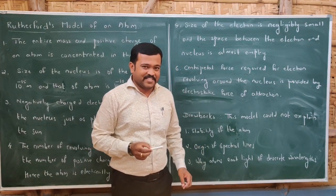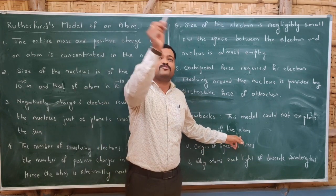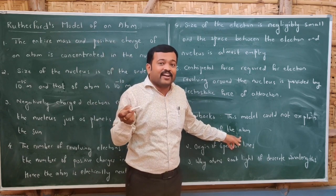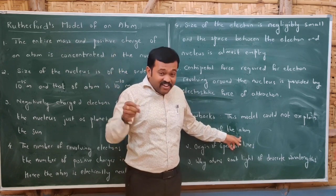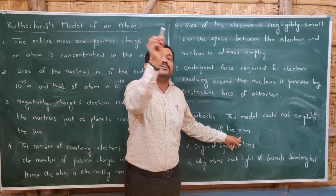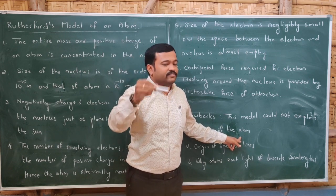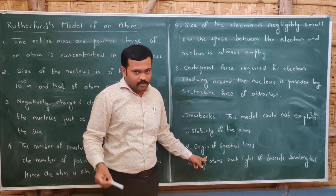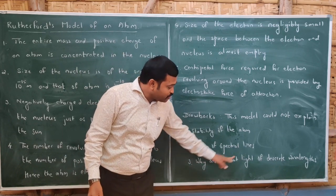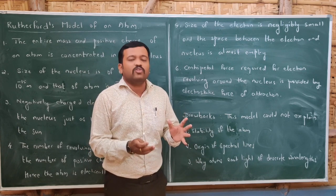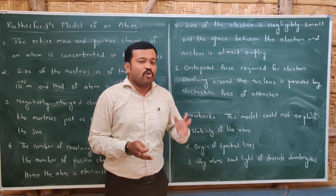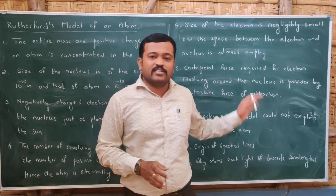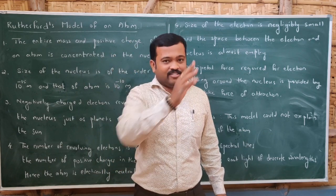However, this model had drawbacks. It could not explain the stability of the atom. According to the model, revolving electrons are accelerating, and accelerating charges always emit electromagnetic waves. If electrons emit electromagnetic waves, they should lose energy, spiral inward, and eventually fall into the nucleus — which does not happen. Additionally, the model could not explain the origin of spectral lines, i.e., why atoms emit light of discrete wavelengths rather than all wavelengths.